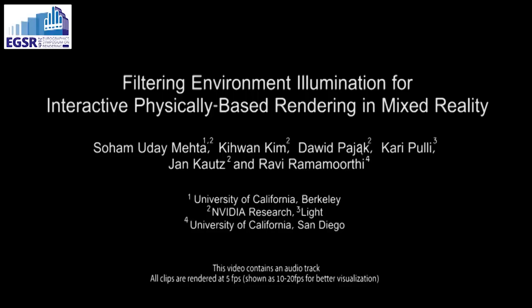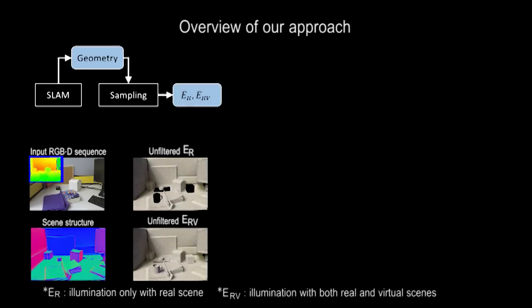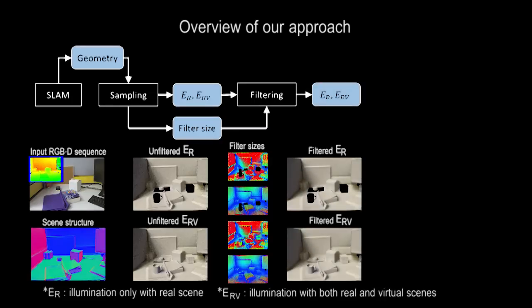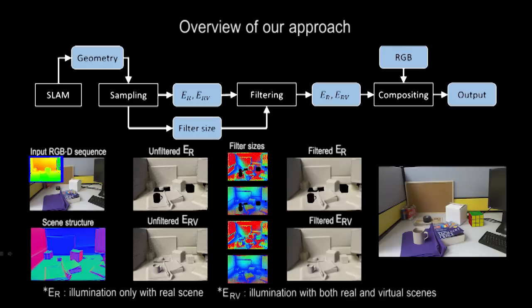In this paper, we present a mixed reality system with physically based rendering. Our algorithm starts with a SLAM stage that uses depth to obtain camera pose and scene geometry. We then use ray tracing to compute the scene illumination both with and without inserted virtual objects. We refer to these as ERV and ER respectively. The sparsely sampled direct and indirect illumination is then filtered to remove noise using a physically correct filter size. The filtered illumination is then composited with the connected camera's RGB image to produce the mixed reality image.